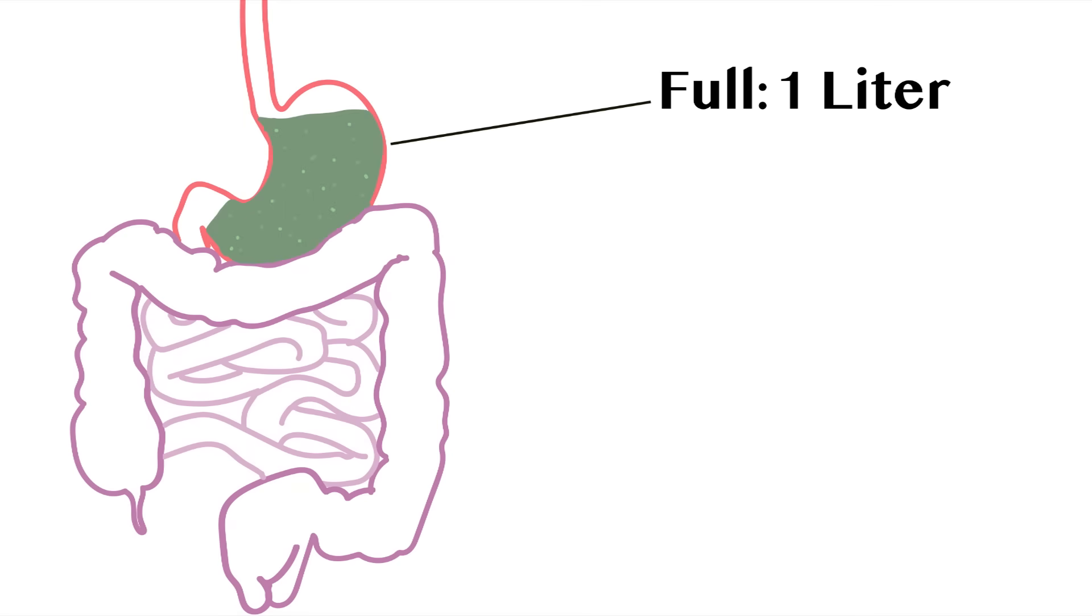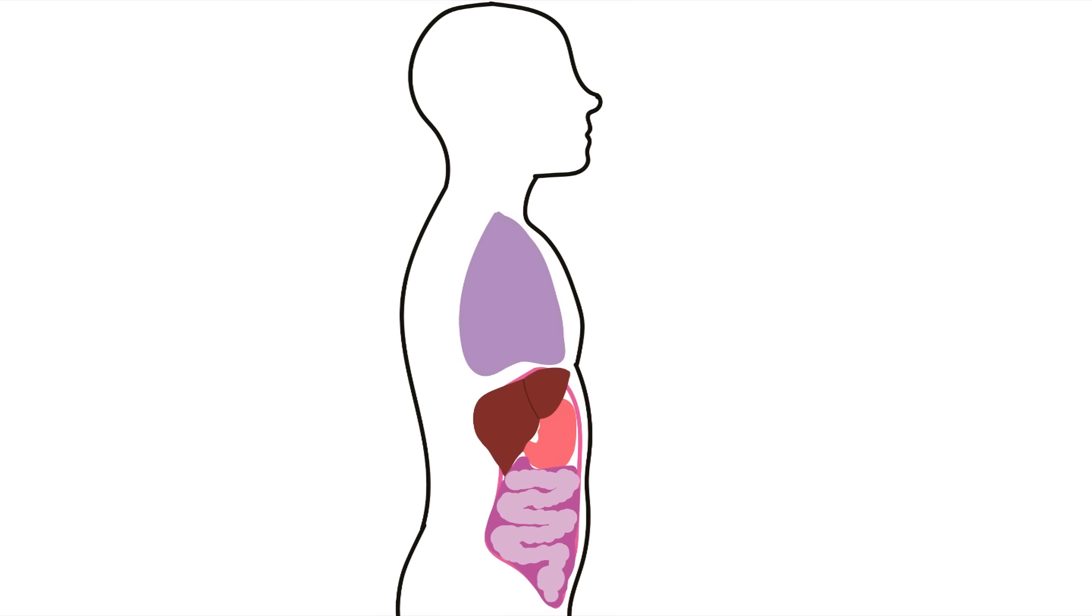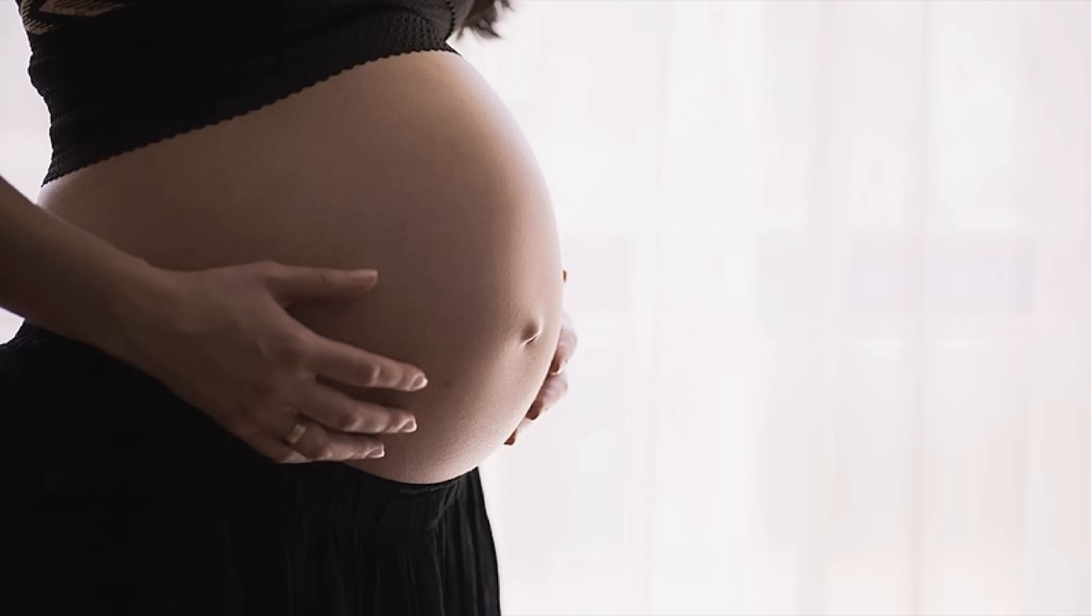The stomach by default holds one liter of food, but because the organ tissue can stretch, its volume can increase up to three liters. With the stomach volume now being two to three times larger, it presses up against your abdominal organs which are packed together like sardines, making the infamous food baby.